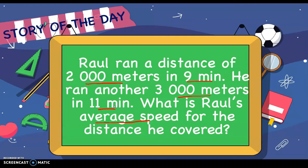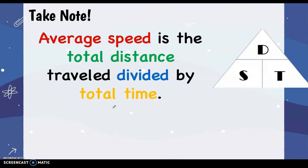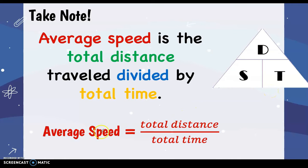Now, how are we going to solve the average speed? Let's define it first. Average speed is the total distance traveled divided by the total time. Using this triangular chart, we will be able to generate the formula. So we have: average speed is equal to the total distance divided by the total time. This is the formula for average speed.